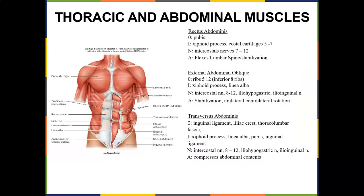Now let's look at the abs. The rectus abdominis originates on the pubis and inserts on the xiphoid process and costal cartilages 5 through 7. Nerve supply is intercostal nerves 7 through 12. It flexes the lumbar spine and stabilizes. There are different EMG studies out there, but crunches to a certain height where your scapula has come off the table seem to do well as far as recruiting the rectus abdominis.